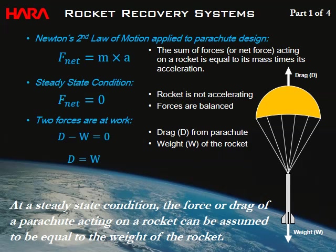Newton's second law as applied to parachute design: the net forces acting on a rocket equals mass times acceleration. To simplify, we assume a steady state condition — the rocket is no longer accelerating and forces are balanced, so F_net = 0. The two forces at work are the weight of the rocket and the drag counteracting it. So D minus W equals zero, or D equals W. The drag force of the parachute can be assumed equal to the weight of the rocket.